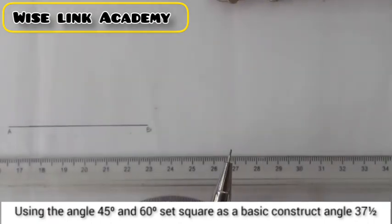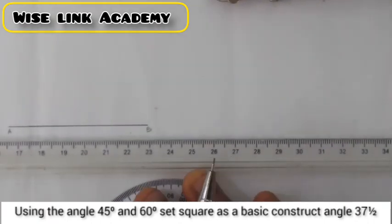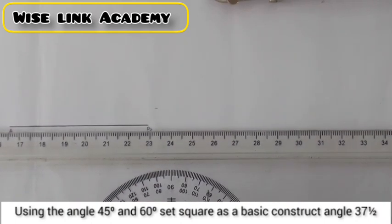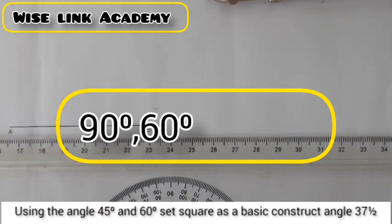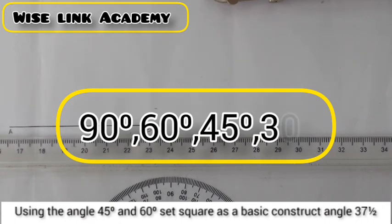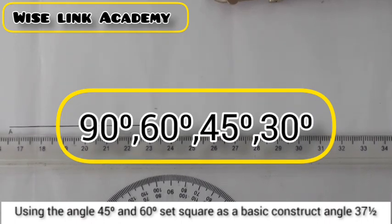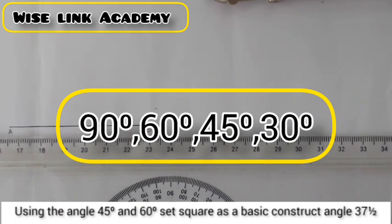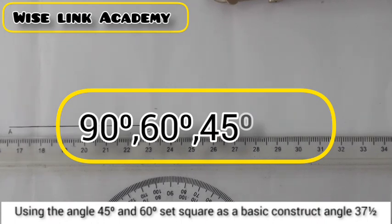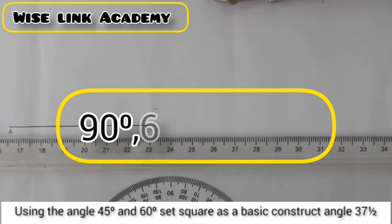My next task is that we said we have some special angles. In engineering, we have angle 90, 60, 45, and 30. In between these angles, where does angle 37.5 fall? From my observation, angle 37.5 falls in between 45 and 30. So I need to get 45, then 30, and in between them I can easily find 37.5.